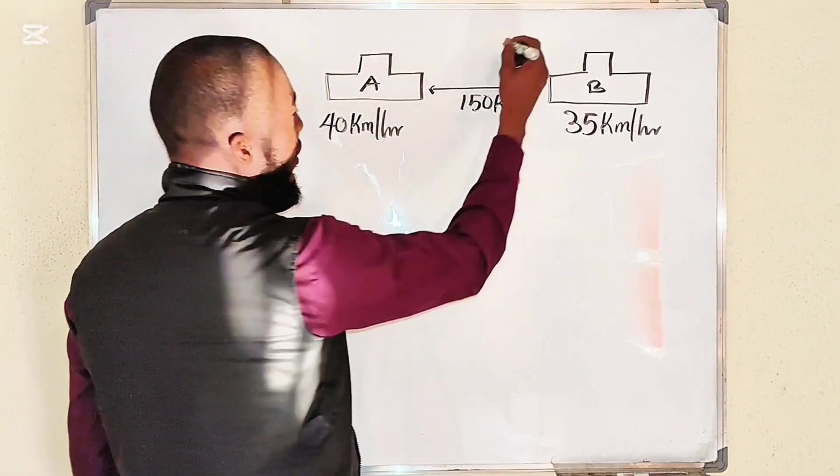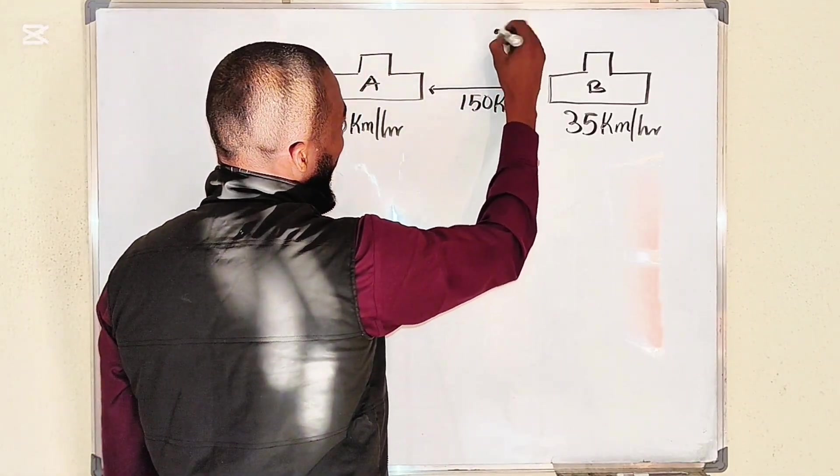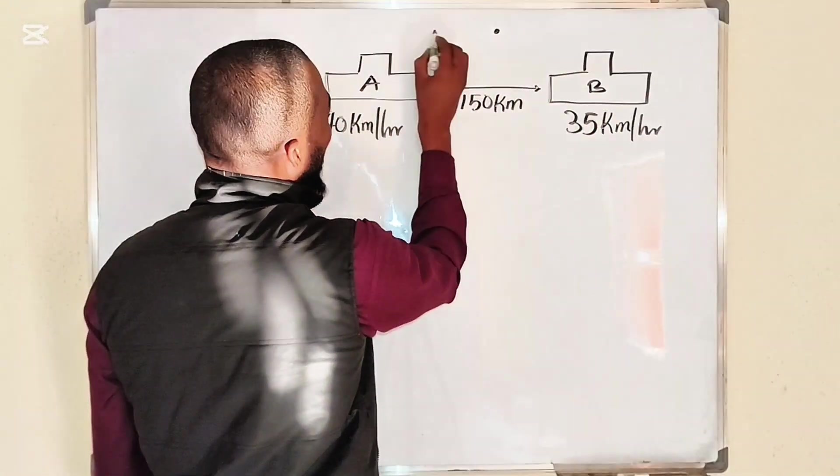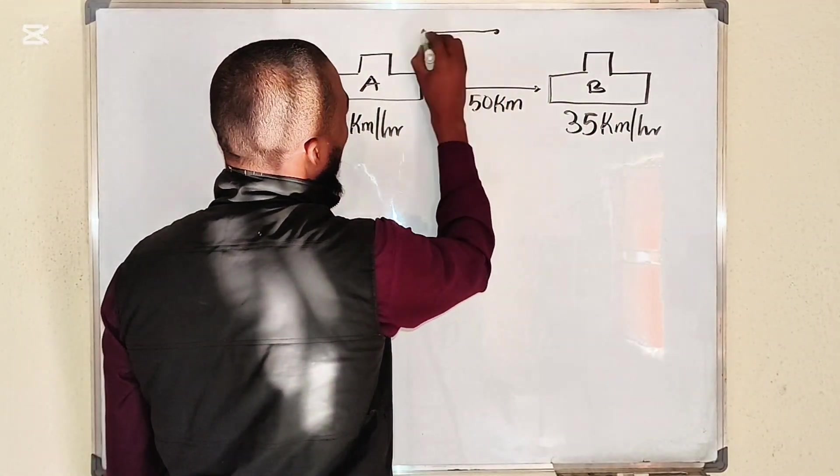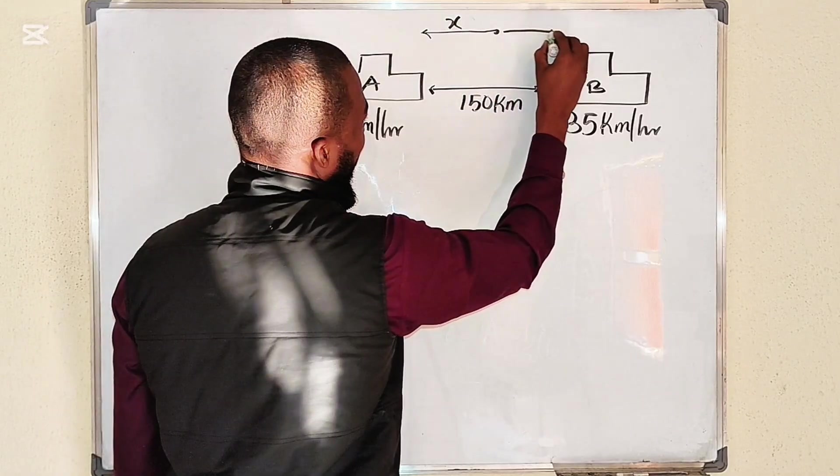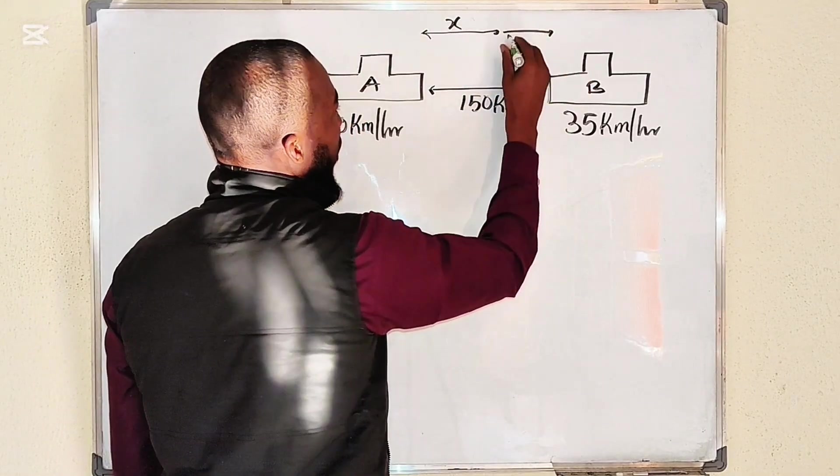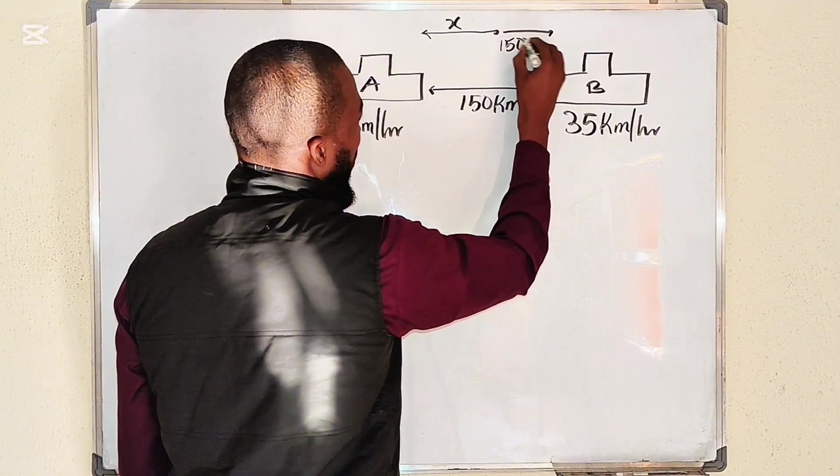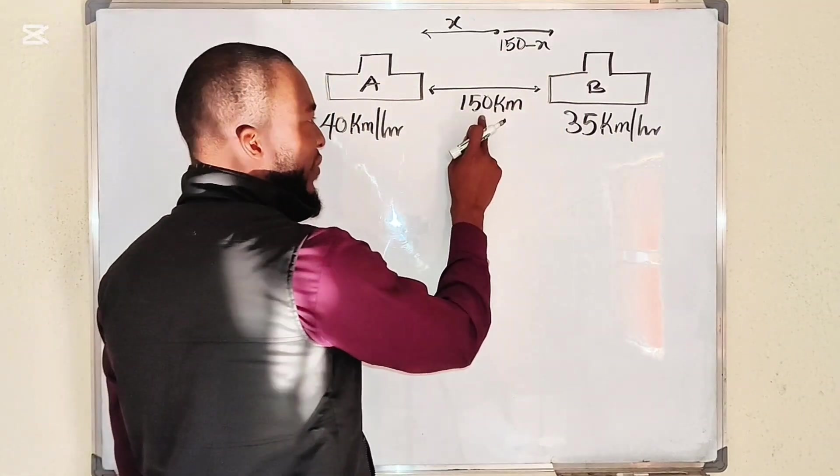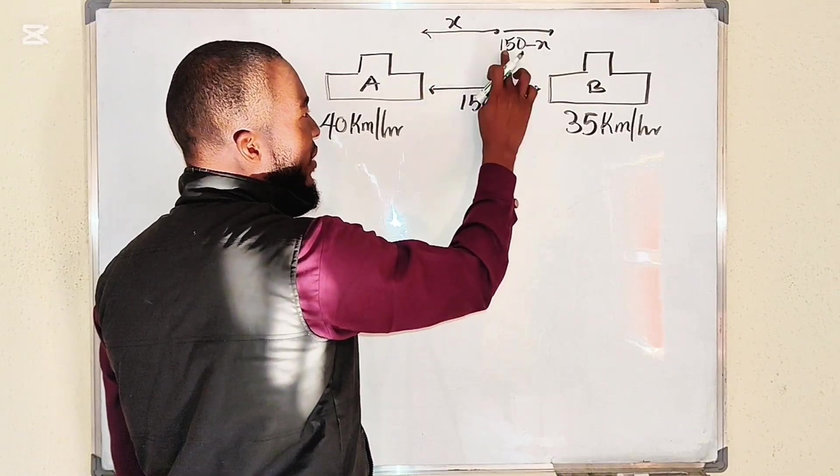Then from here down here would be 150 minus x, because the total distance apart is 150. If this one has covered x, this one will cover the rest of the values by subtracting x from 150.